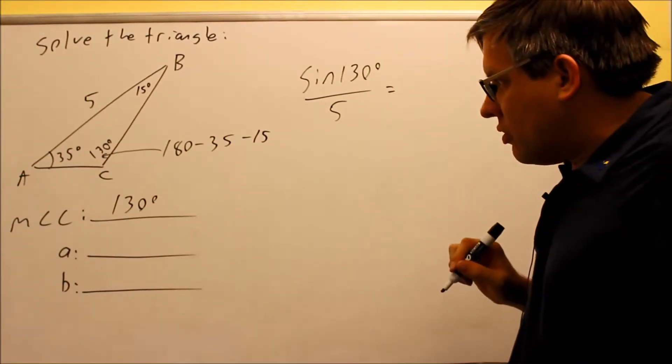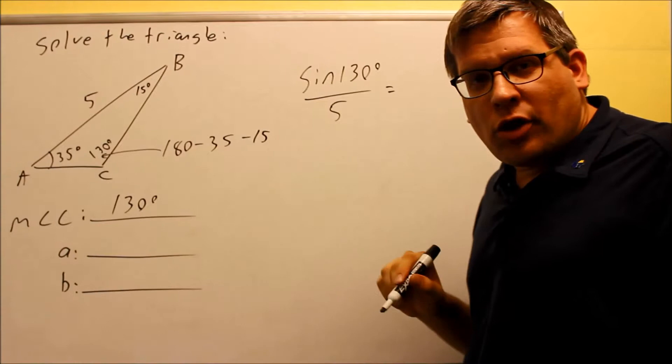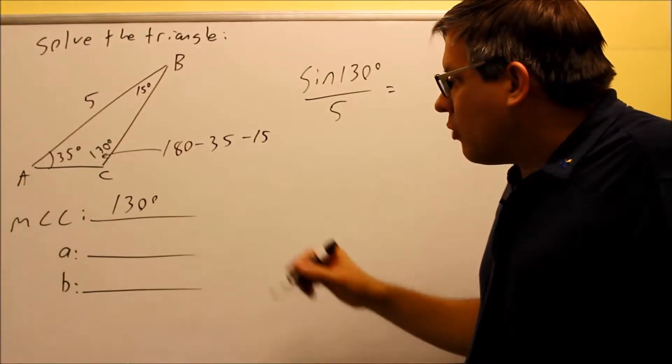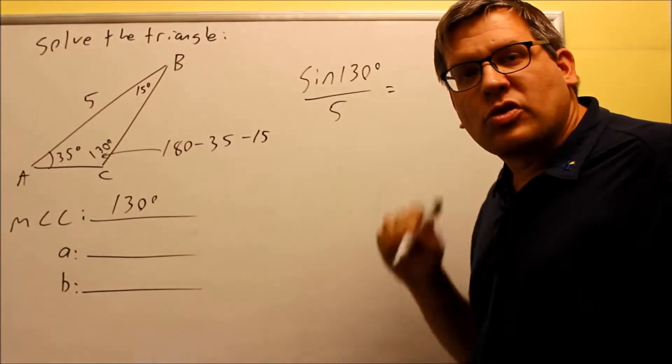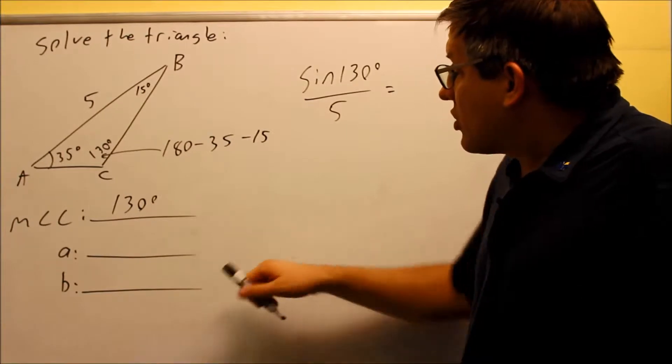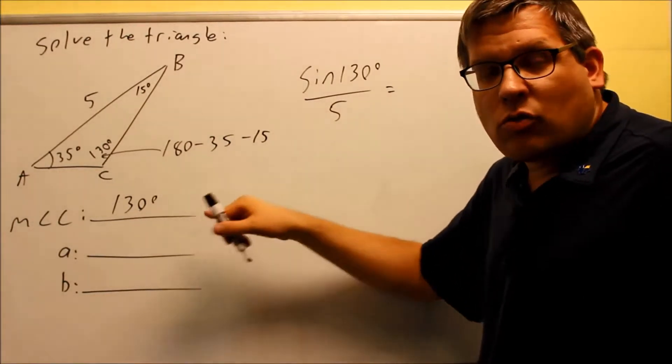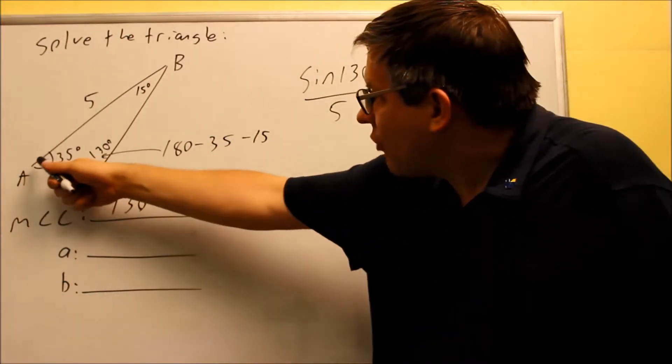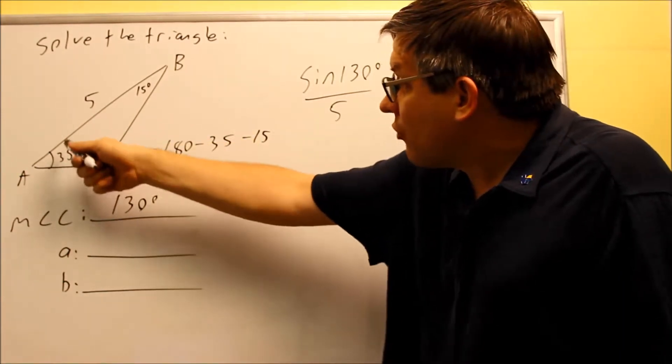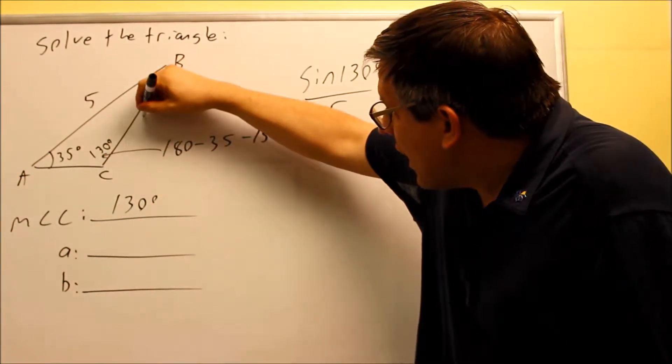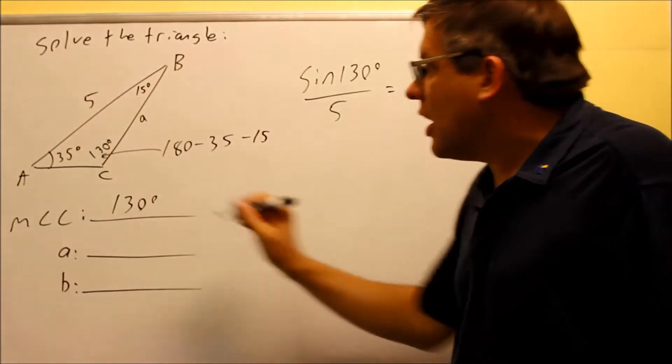Now we're going to set this equal to whatever side we're trying to solve for next. Depending on which one you're trying to solve for, we're going to use a different angle. Let's suppose we want to solve for A first. Since we're going to solve for A, we need to use the 35 degrees because that would be opposite A, which is right here. That's lowercase a.